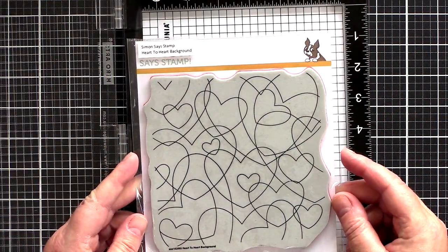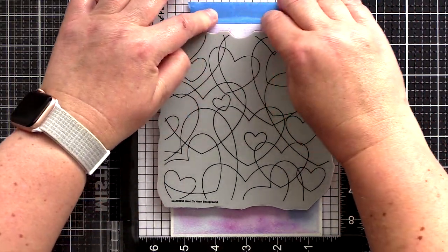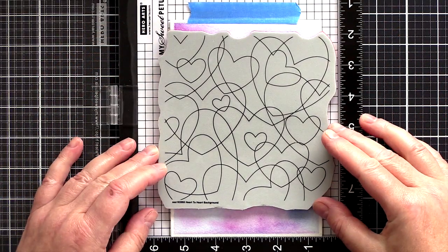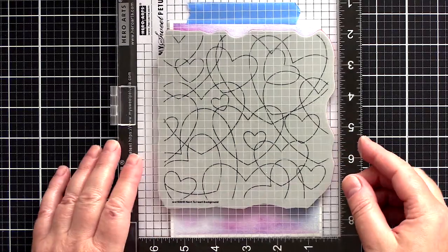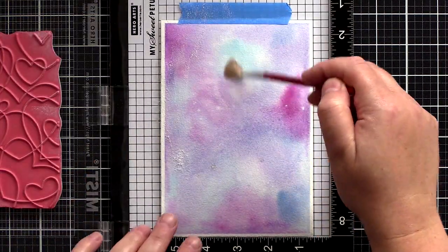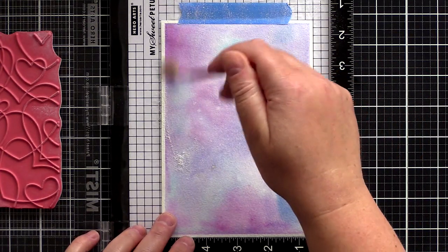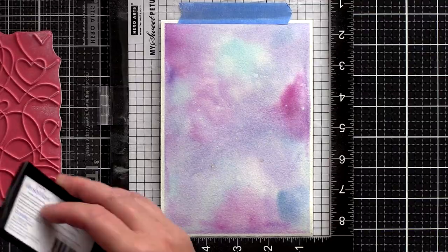So it is only at this point that I'm getting out the heart to heart background stamp in order to white heat emboss the pattern and this is my tip. You could have heat embossed the pattern before watercoloring which does allow for lovely puddling of the color in the wells created from the heat embossing. However, you often get paint over the emboss lines which isn't always the easiest to wipe away without disturbing the painted background.